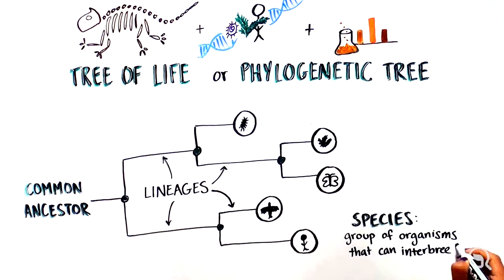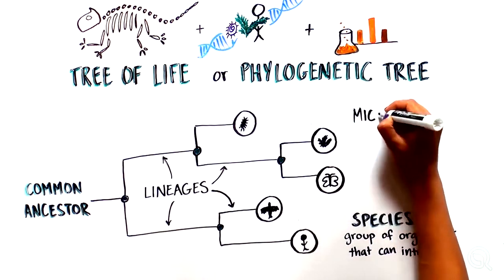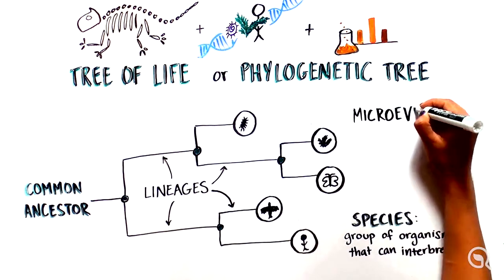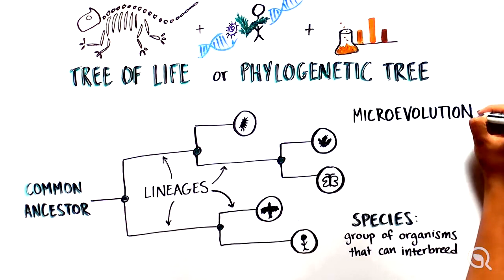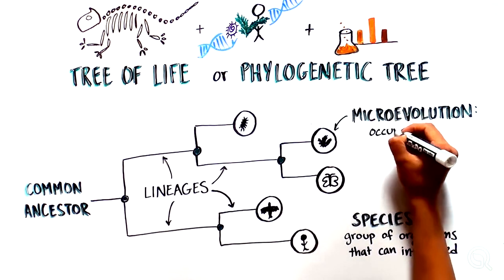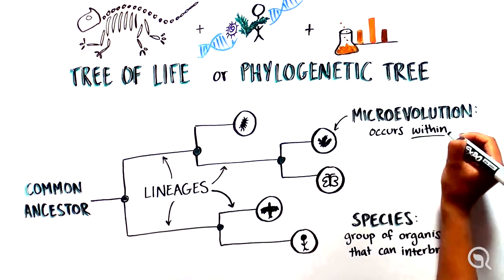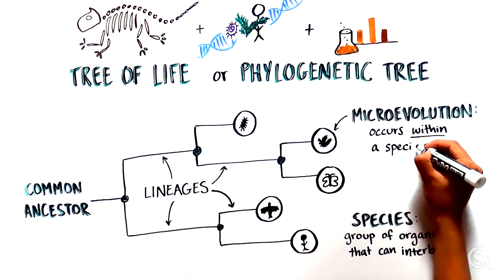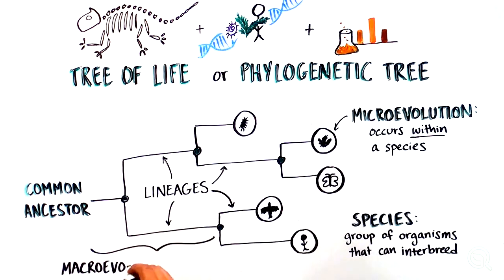A species refers to a group of organisms that can interbreed with each other. Evolution that happens at the population level, meaning within an individual species, is referred to as microevolution. In contrast, macroevolution is used to describe evolution at or above the individual species level. Let's zoom in to talk about microevolution.